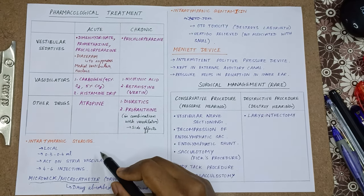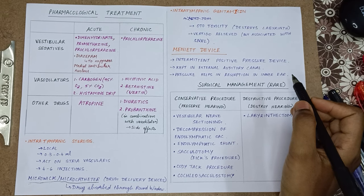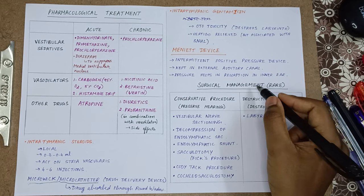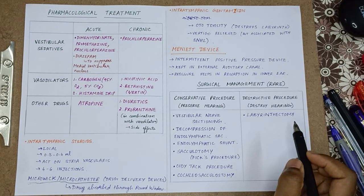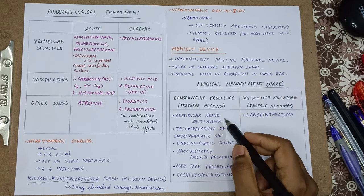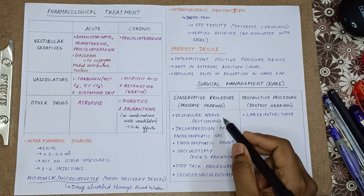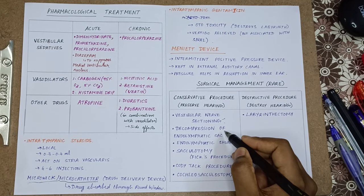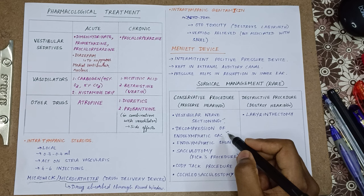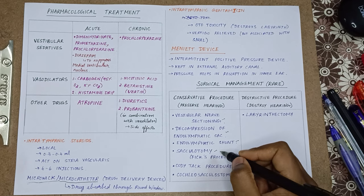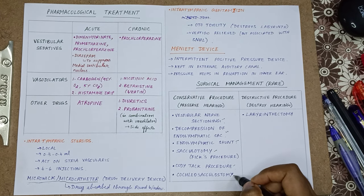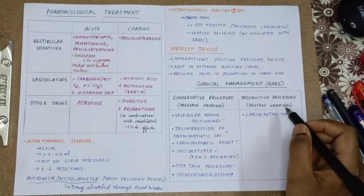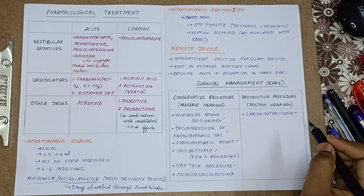When pharmacological treatment, steroids, gentamicin, and the Meniett device do not work, surgical management is done. Surgical management has conservative and destructive procedures. Conservative procedures preserve hearing and include vestibular nerve sectioning (cutting the vestibular nerve responsible for vertigo), decompression of the endolymphatic sac, endolymphatic shunt, sacculotomy (removal of the saccule, also called the Fick procedure), Cody tack procedure, and cochleosacculostomy (creating pores in the cochlear duct). The destructive procedure is labyrinthectomy.